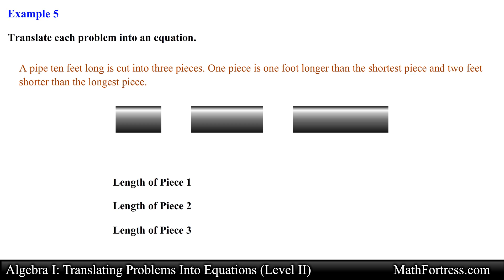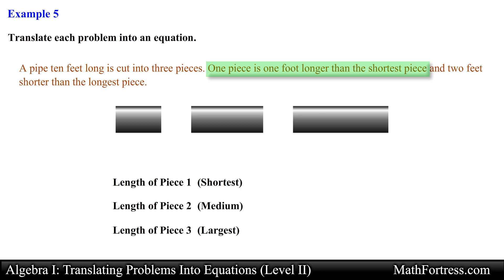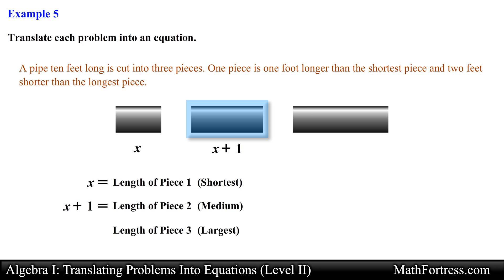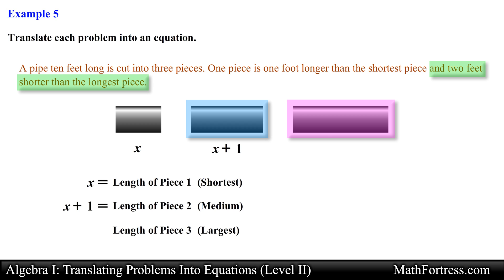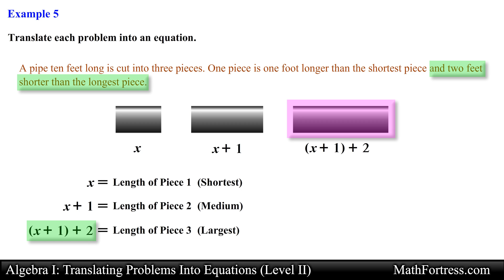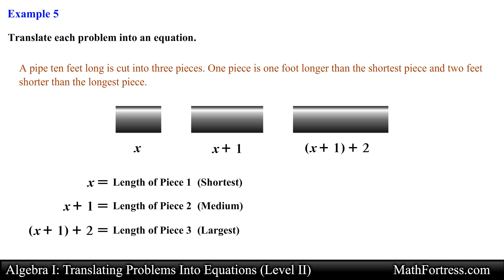Next let's assign variables to each unknown length. Because we have three distinct pieces we label them as the shortest, medium, and longest piece so we can easily distinguish them. From the second sentence, one piece is 1 foot longer than the shortest piece, so let's assign x to the shortest piece. The medium piece is then denoted as x plus 1. We are also told the medium piece is 2 feet shorter than the longest piece, meaning the longest piece is 2 feet longer than the medium piece — so it can be denoted as x plus 1 plus 2.